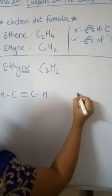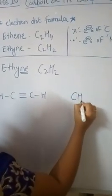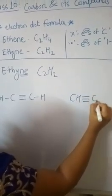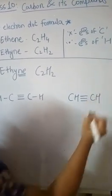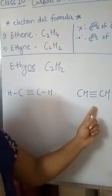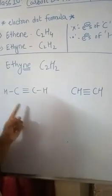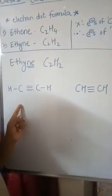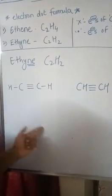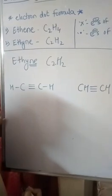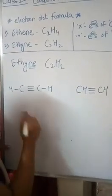We will write the condensed formula for ethyne: CH triple bond CH. This representation is the condensed structural formula. Now immediately we will draw the electron dot structure of this also.